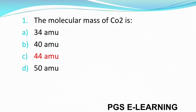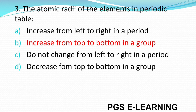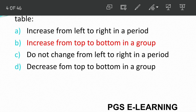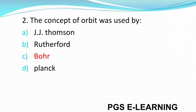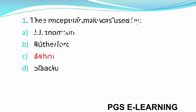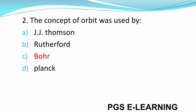Q1: The molecular mass of carbon dioxide is 44 AMU. Q2: The concept of orbit was used by J.J. Thompson, Rutherford, Bohr, or Orplan? The correct answer is Bohr.